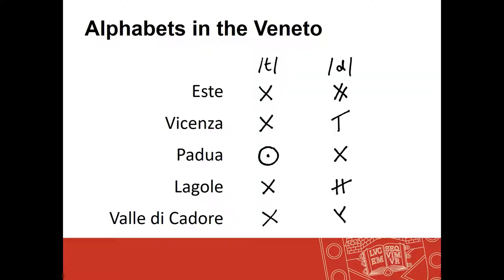Like the Greek alphabet Luraghi describes, the overall system of the alphabet and all the letters and the sounds represented are basically the same, but the letter shapes are very distinctive. The clearest example is the signs for T and D. In Este, the T is a cross shape, and the D is actually derived originally from the Etruscan letter Z. In Vicenza, they share a letter T but have a different sign for D. But in Padua, we have something very different — the cross shape used for T in Este is used for D instead.